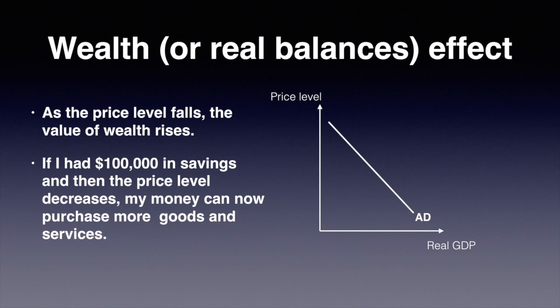If the price level decreases, the purchasing power of money increases. Therefore, people will be able to buy more as their money is now able to purchase more goods and services than before. For example, if I had $100,000 in savings and then the price level decreases, my money can now purchase more goods and services. Items that used to cost $1,000 may now cost $500, allowing me to purchase more.